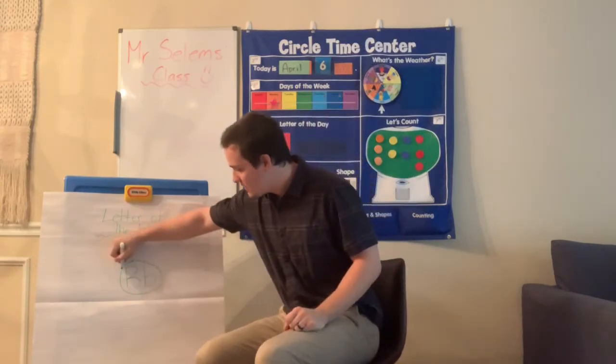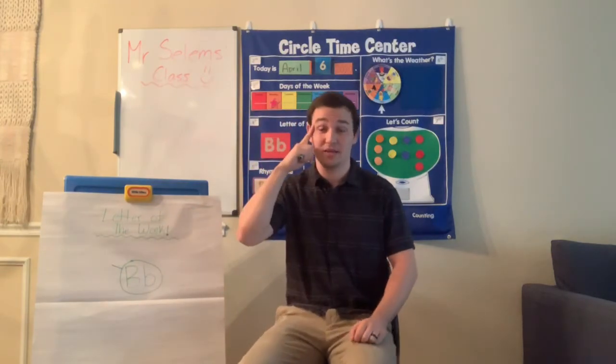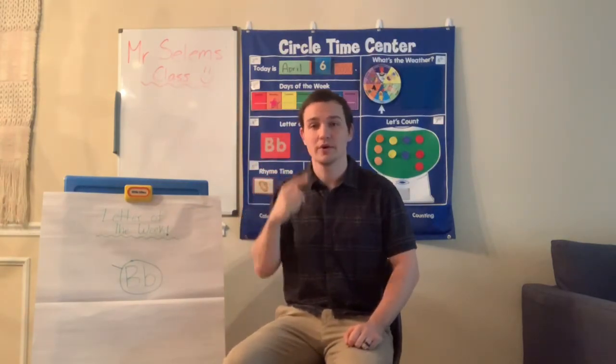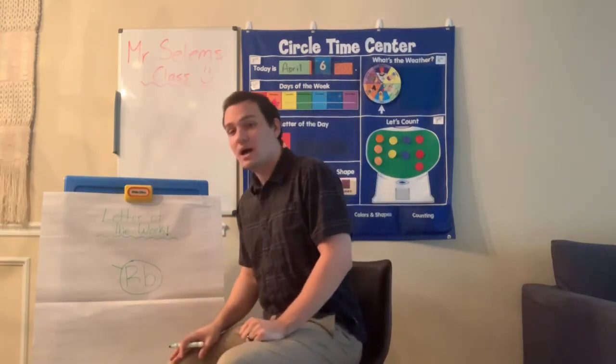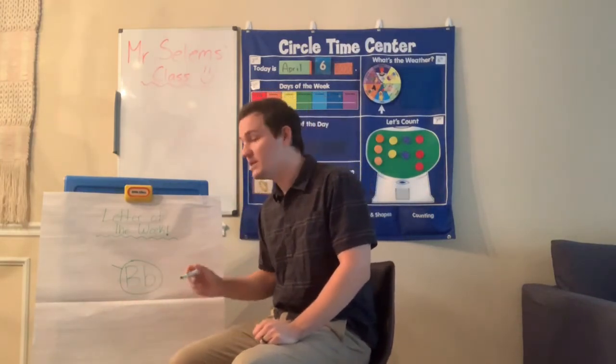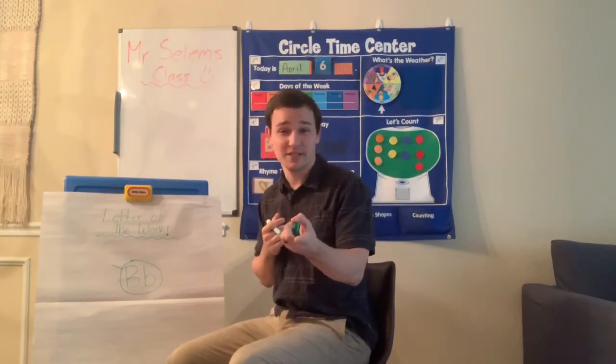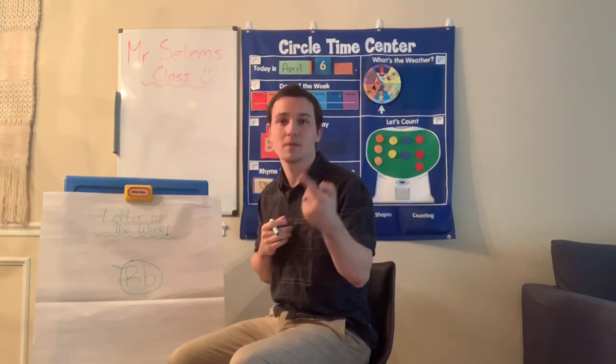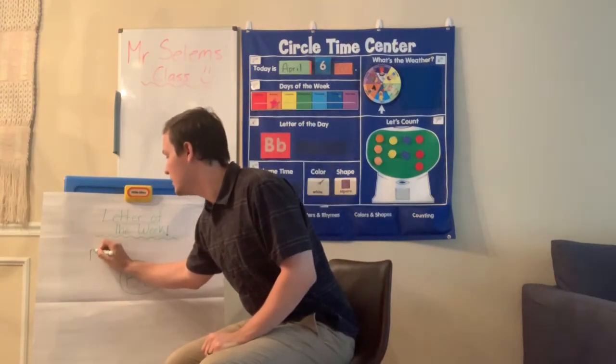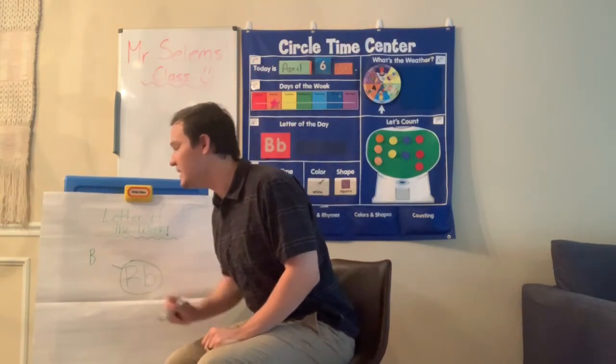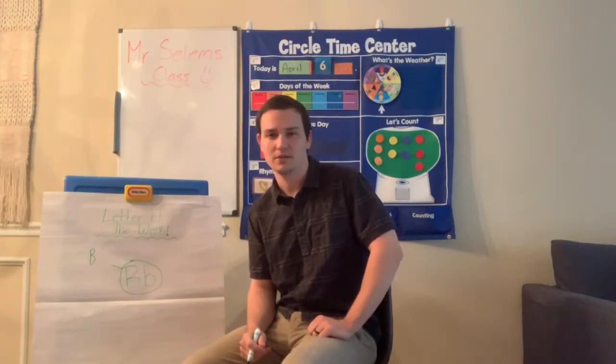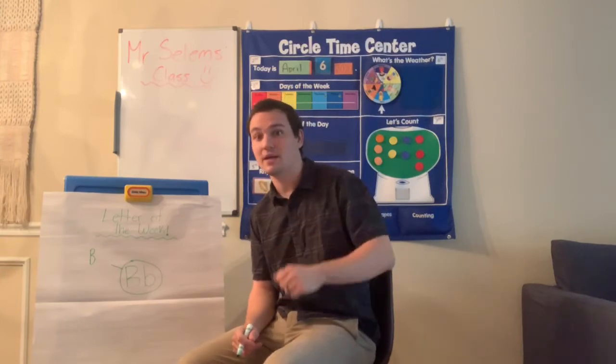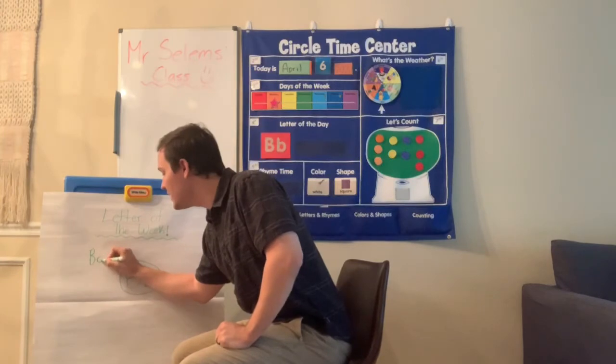So the first word that I'm thinking of is the word boy. Mr. Selim's is a boy. So help me spell it out together. We know it starts with the buh, buh sound. And what letter is that? B. Awesome job. So I'm going to write B. Now I need the O sound. Bo, bo. Right. O. B, O.